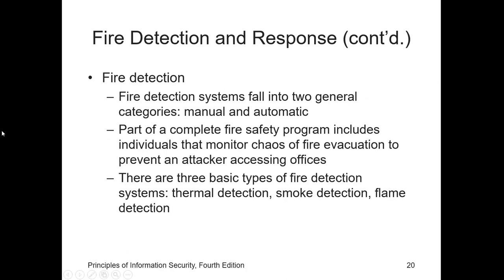Before a fire can be suppressed it must be detected. Fire detection systems fall into two general categories: the manual and the automatic. The manual fire detection systems include human responses such as calling the fire department as well as manually activating alarms such as sprinkler systems and gaseous systems.